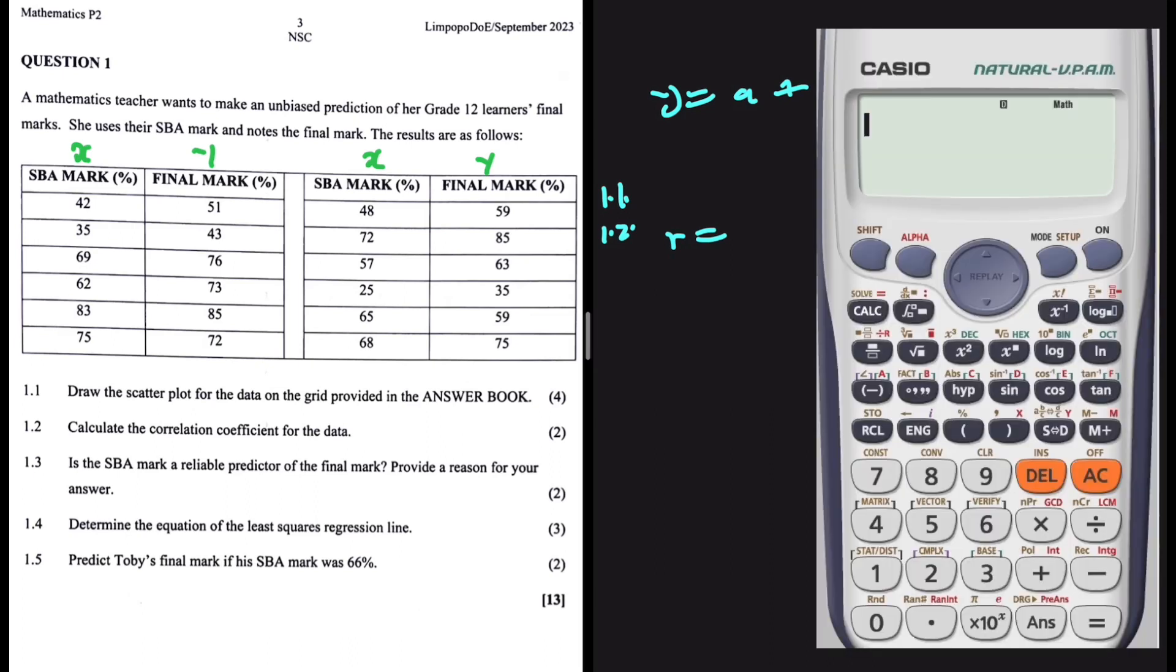You want to press mode or setup and then you want to go to stat. Here in this calculator, it's option number 3, so I'm going to press 3. After pressing 3, I'm going to go to the equation for the least squares regression line, that is a plus bx. You can see here that it is option number 2. On a different calculator, it might be a different option, maybe option number 3, but the steps are identical.